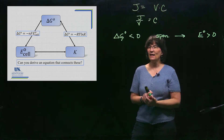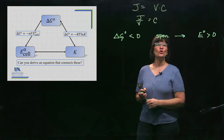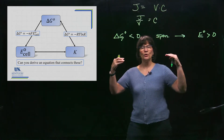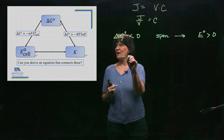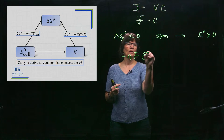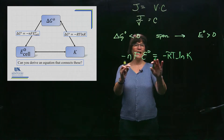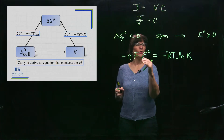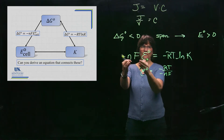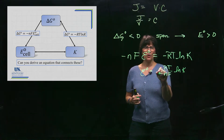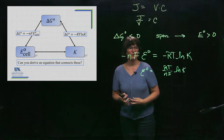For the bottom part of the triangle — the direct relationship between E° and K — you can derive it by setting the two equations equal to each other, since both equal standard ΔG°: −nFE° = −RT ln K. Solving for E°: the negatives cancel, giving E° = (RT/nF) ln K. This gives us a direct relationship between E° and the equilibrium constant K.